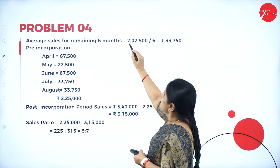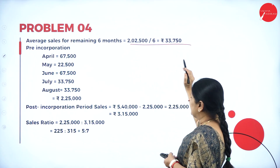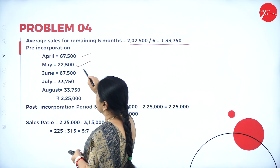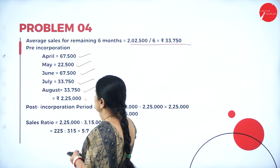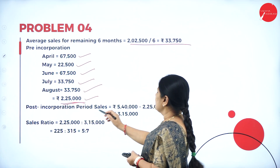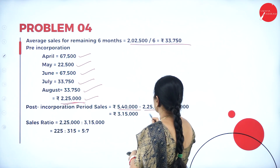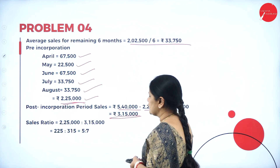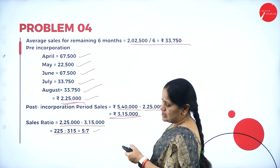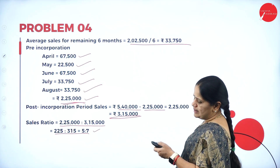The average sales for the remaining 6 months is 2,02,500. Adding up the sales for April, May, June, July, and August gives the pre-incorporation period sales. The post-incorporation period sales equals 5,40,000 minus 2,25,000, which comes to 3,15,000. The ratio works out to 5 is to 7. So we now have both the sales ratio and the time ratio.